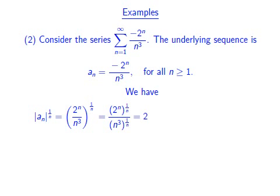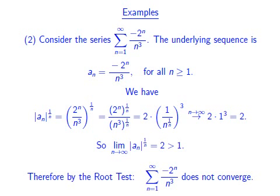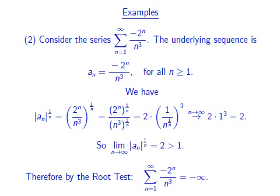The denominator can be rearranged as follows. As n tends to infinity, n^(1/n) tends towards 1, and thus we obtain an overall limit of 2 times 1 to the power 3, which equals 2. That means the limit of |a_n|^(1/n) exists and is greater than 1, so the root test tells us that our given series does not converge. Furthermore, since all sequence elements are negative, the series diverges to minus infinity.